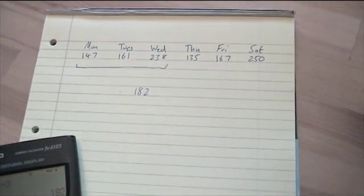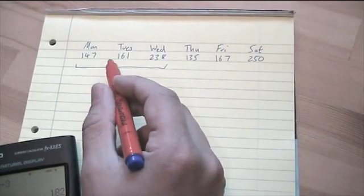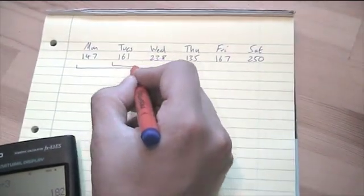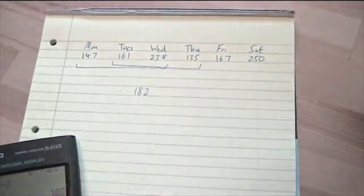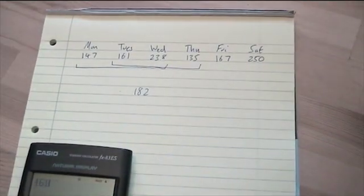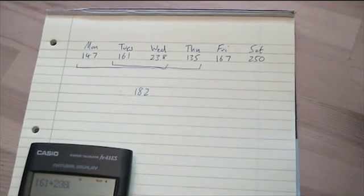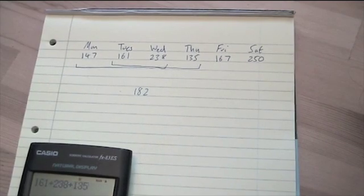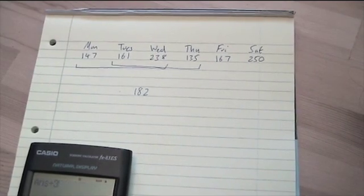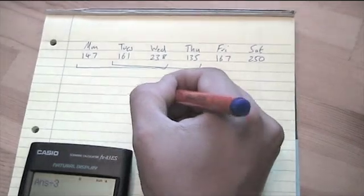The next thing we do is move along one. It's Moving Average 2, move along one, and we take the next three. So we're going to do 161, add 238, add 135, divide that by three, it's 178.